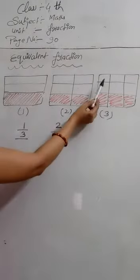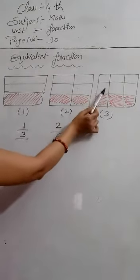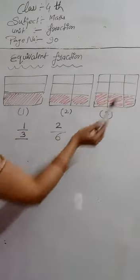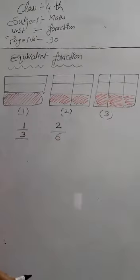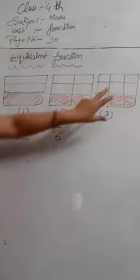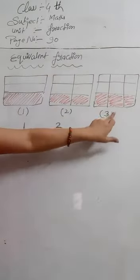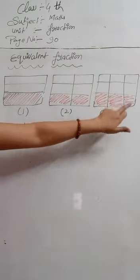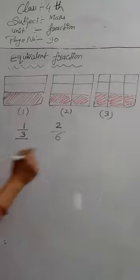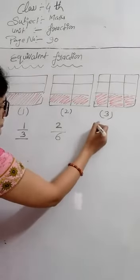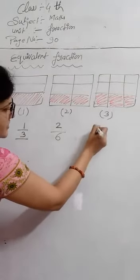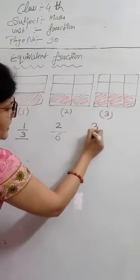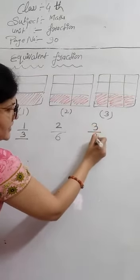Now, we can see here one, two, three, four, five, six, seven, eight, nine. Nine equal parts are there and one, two, three — three parts are only shaded here. So, we will write here our fraction three by nine.